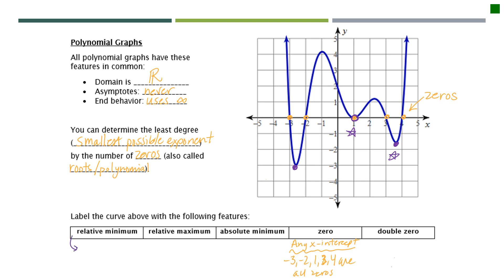When we're talking about a relative minimum, it's not talking about the one that's the lowest. It's just talking about ones that are relatively low — relatively minimum compared to the rest of the graph.